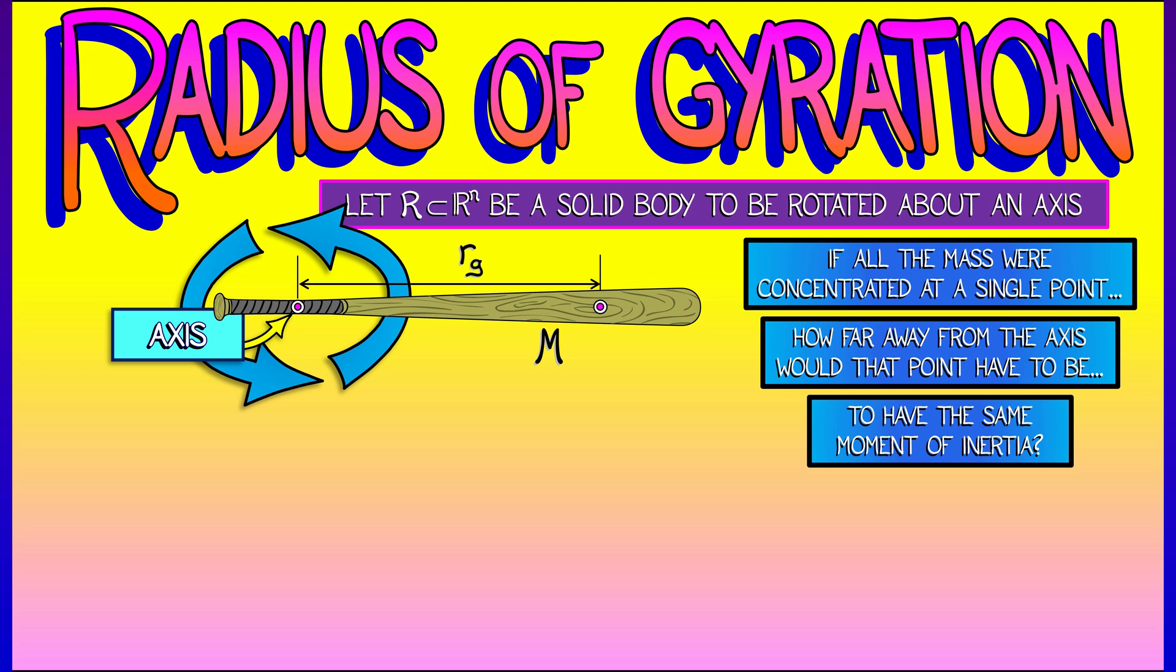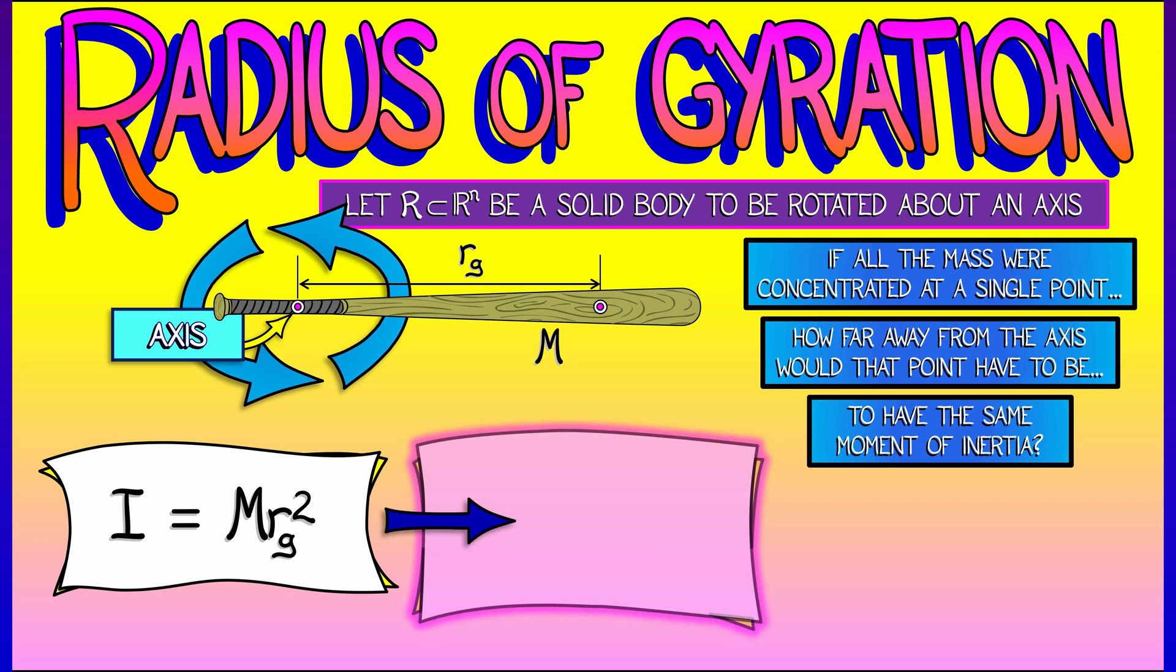Let's call that distance, that radius, r sub g. R g, I like that. Okay, the formula would be I equals the mass times that distance squared. That is M r_g squared. And that gives us a formula for computing r_g in general.